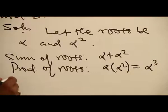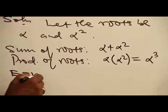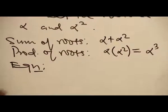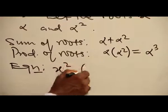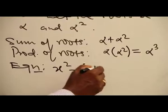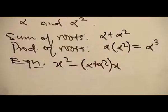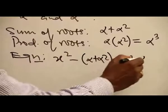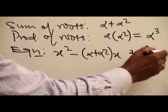Now we are going to write the equation, and the equation is x² minus (alpha plus alpha²)x plus alpha³ equal to 0.